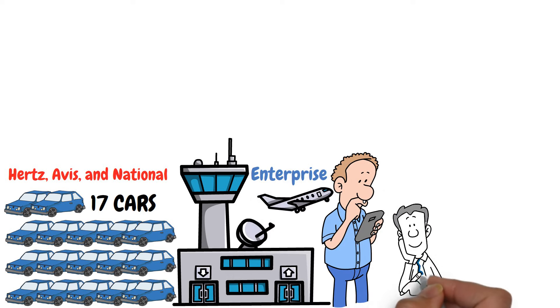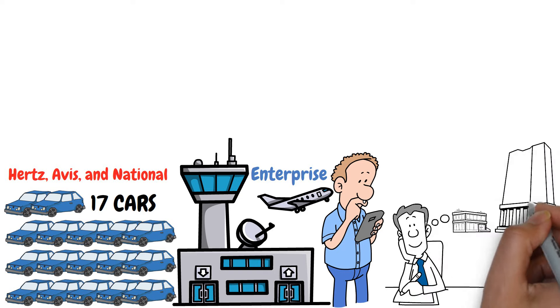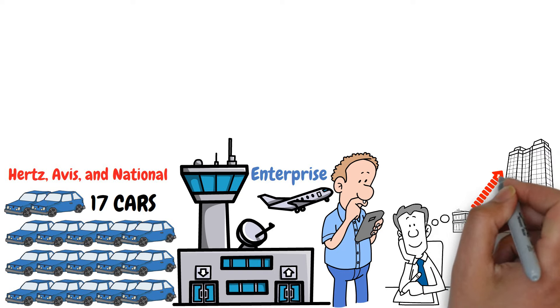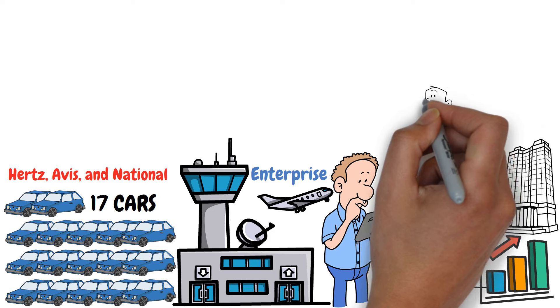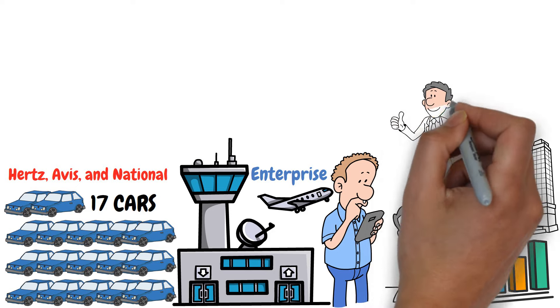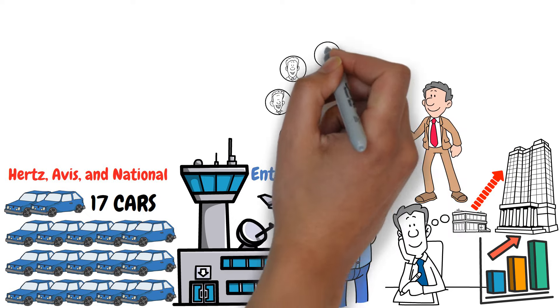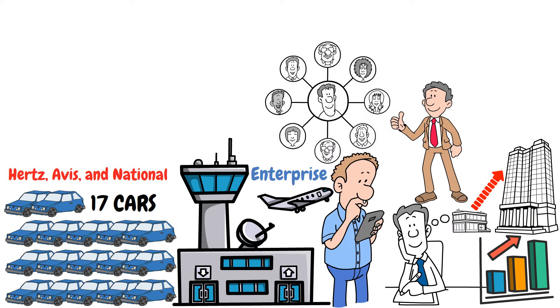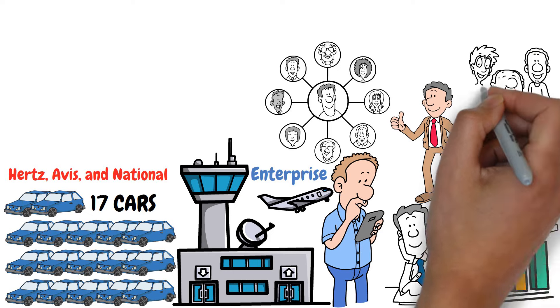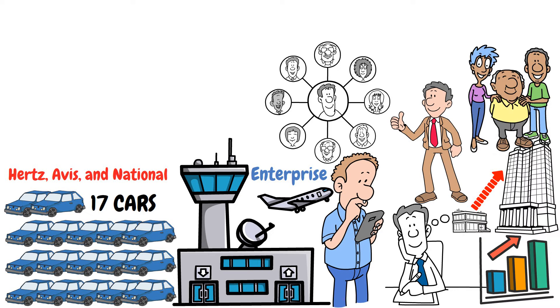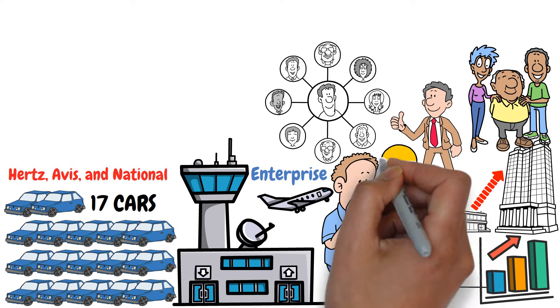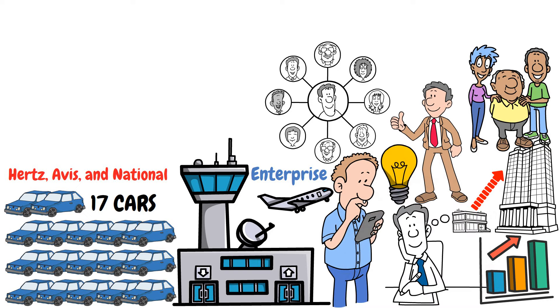He named his company Enterprise after the battleship he had flown from in the Pacific. Jack passed away about a year and a half ago, but by then, his car rental company, which started with just those 17 cars, had become more valuable than Hertz, Avis, and all other rental companies combined. The man behind this massive success was Jack Taylor. His son, Andy Taylor, a good friend of mine, now leads the business. There's even a grandchild working there, and it looks like a fourth generation might come soon.